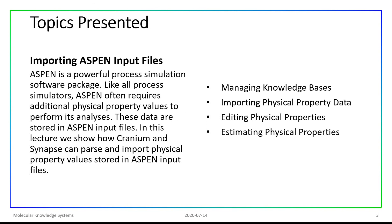Aspen is a powerful process simulation software package. And like all process simulators, Aspen often requires additional physical property values to perform analyses. These physical property values are stored in Aspen input files. In this lecture we will show how Cranium and Synapse can be used to parse and import these physical property values.